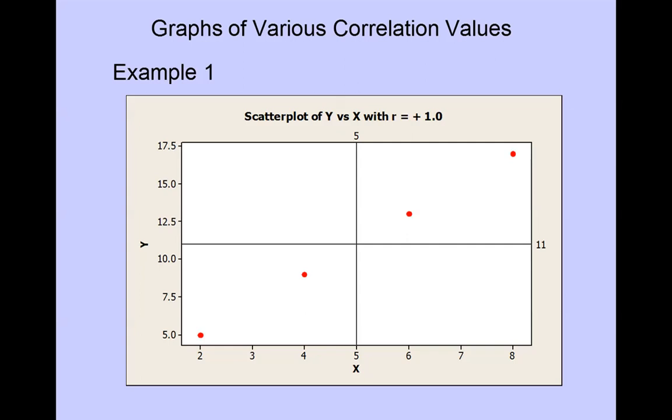Let's look at a few graphs with examples of correlation values. In this case the scatter plot has a correlation of 1. These four points indicate a perfect straight line so you could draw one line that goes through all four of these points and notice that it has a positive slope or an increasing trend.